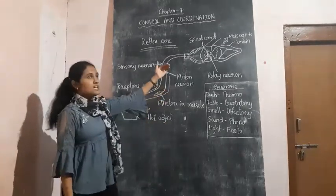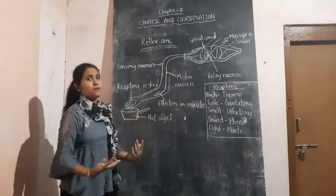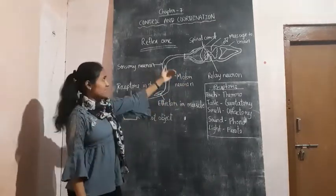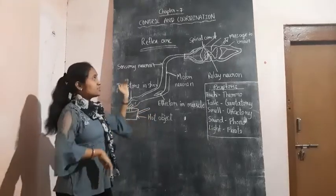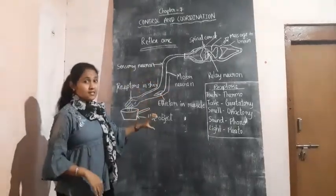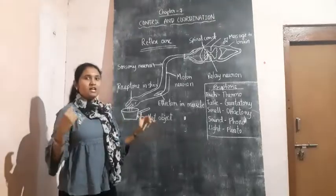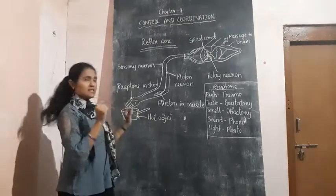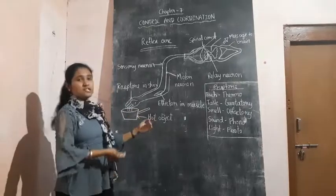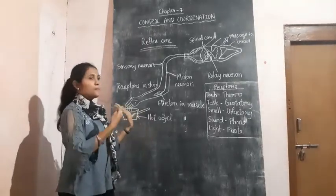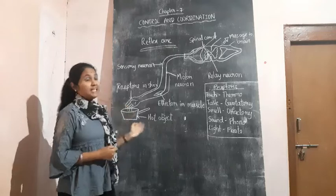Without thinking about how to respond or what the object is, it will directly send the information to move your hand. So due to this system, you will be able to take off your hand quickly. Within an instant, you will take off your hand and you will be safe from the hot object and from any harm.